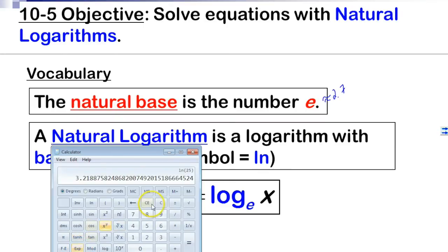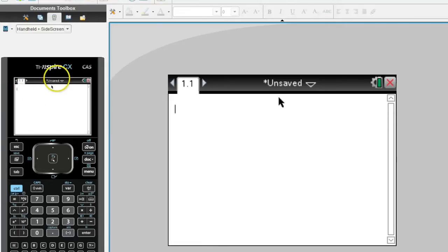Let's look at a different calculator, a graphing calculator. Here I have my TI-Inspire. I can't really zoom in here, so hopefully you can see this. Right here on my calculator, right above the e, you got e to the x, and right above that is the ln. If I wanted to see the value of e, I'll click that.